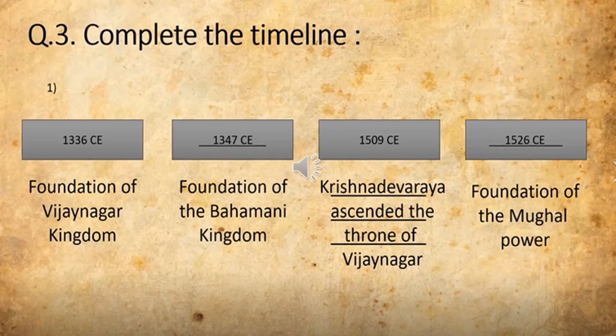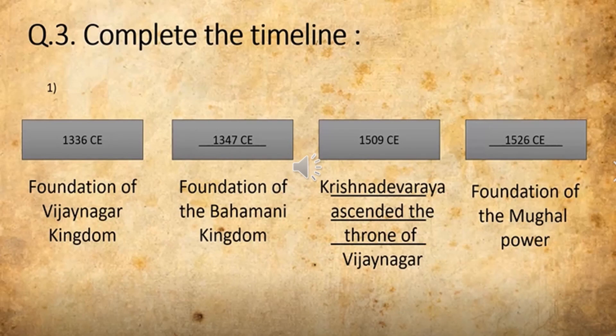See the third one. They have given the year and told you what special event took place. The answer: Krishnadevaraya ascended the throne of Vijayanagara. Or, Krishnadevaraya ascended the throne of Vijayanagara and the year will be given — you have to pick the correct year, that is 1509 CE. And the last one is the Foundation of the Mughal Empire.